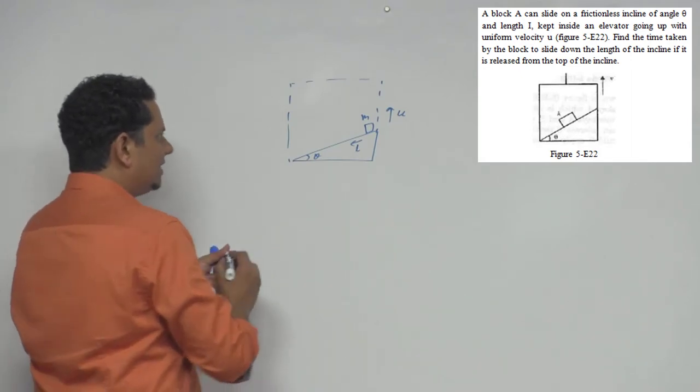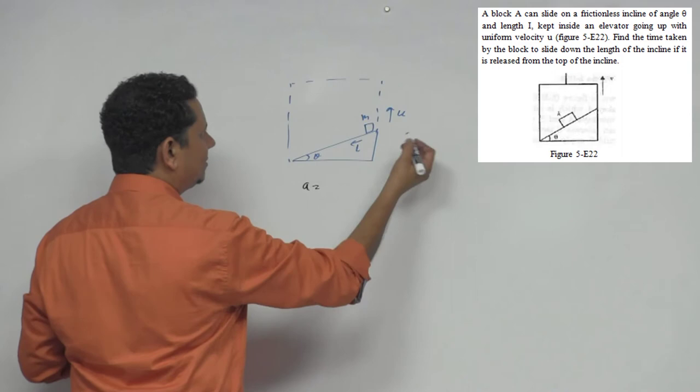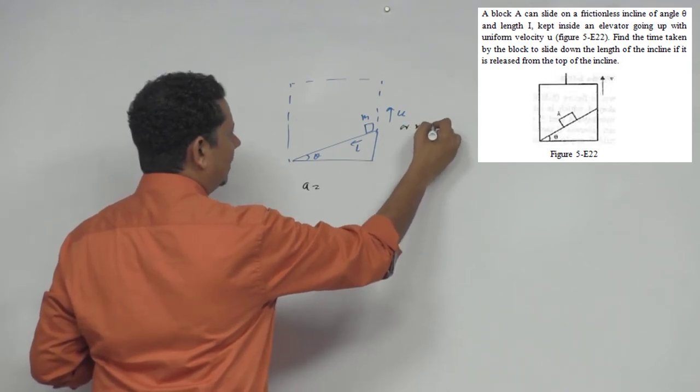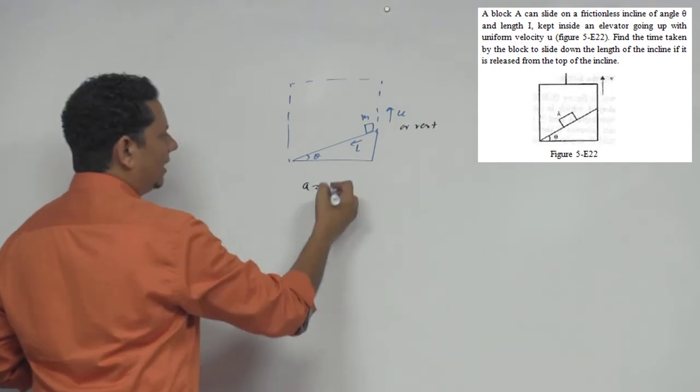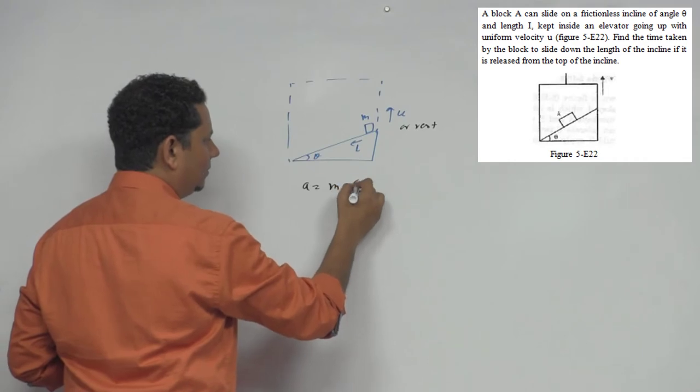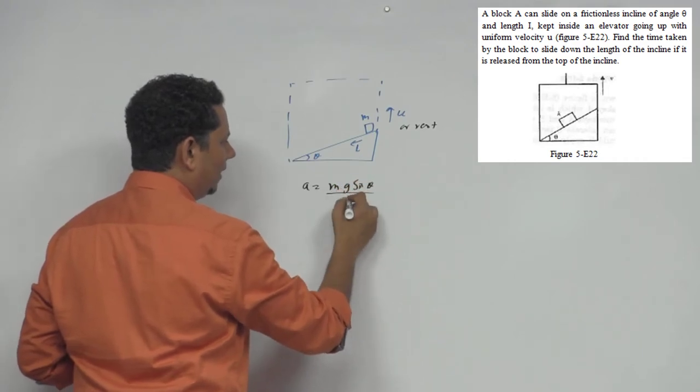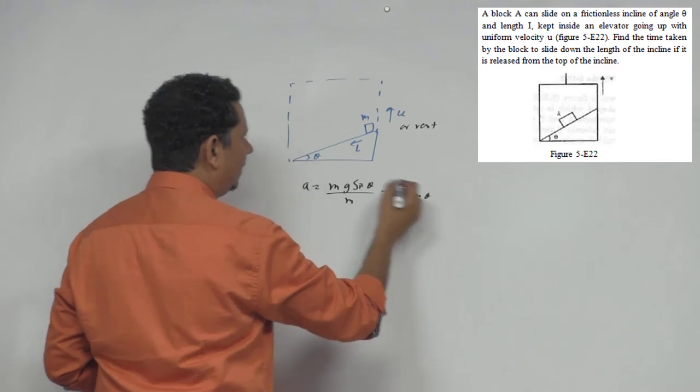So in this case, the acceleration will be the same as at rest. Since this is an inertial frame, acceleration equals mg sin theta, the force, divided by m, so acceleration equals g sin theta.